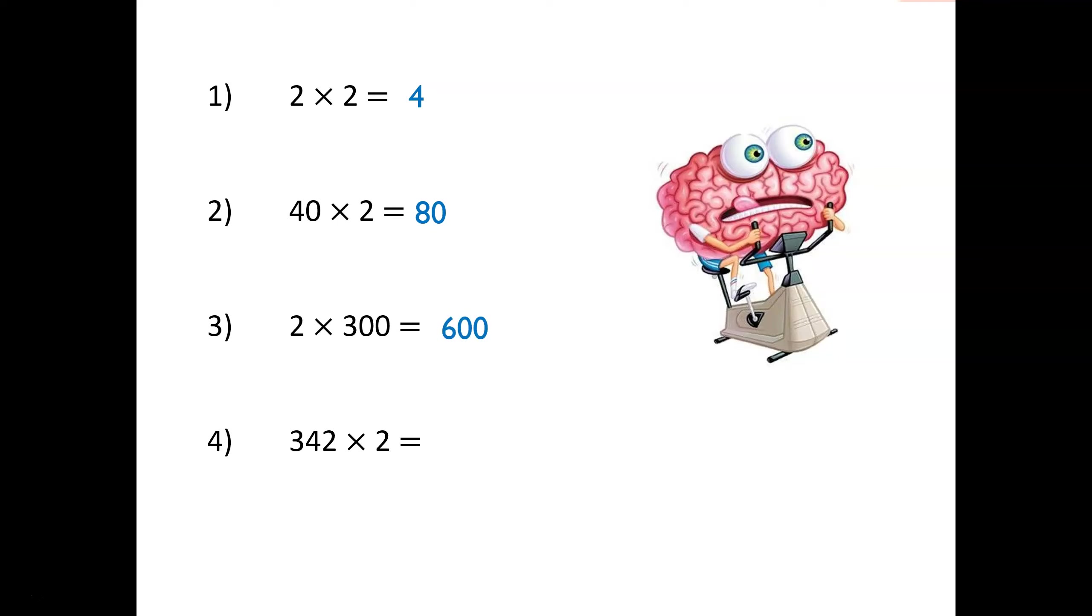What do you notice about question 4? 342 times 2. Well, 342 partitioned into its place values is 300 and 40 and 2. We have already calculated this using partitioning. I just need to add the individual totals together. 600 plus 80 plus 4. Well, 342 multiplied by 2 is equal to 684.